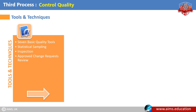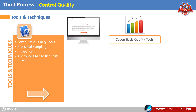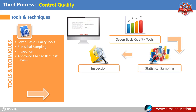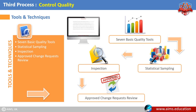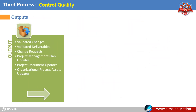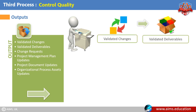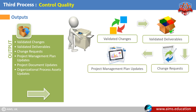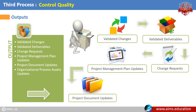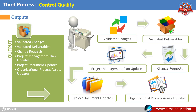Tools and techniques for the perform quality control process include the seven basic quality tools, statistical sampling, inspection, and approved change requests review. The outputs of the quality control process include validated changes, validated deliverables, change requests, project management plan updates, project document updates, and organizational process assets updates.